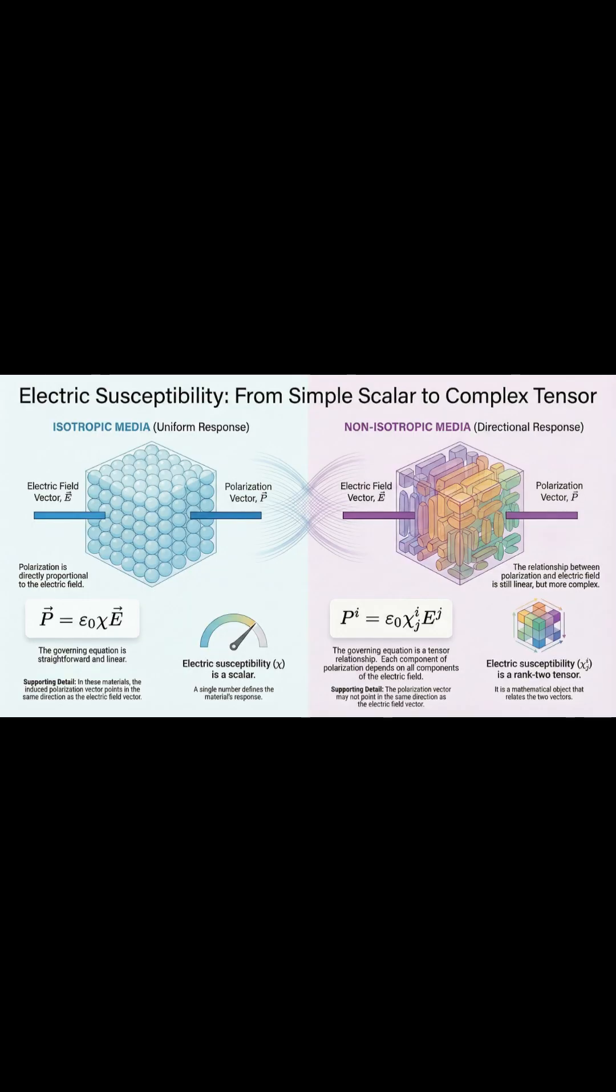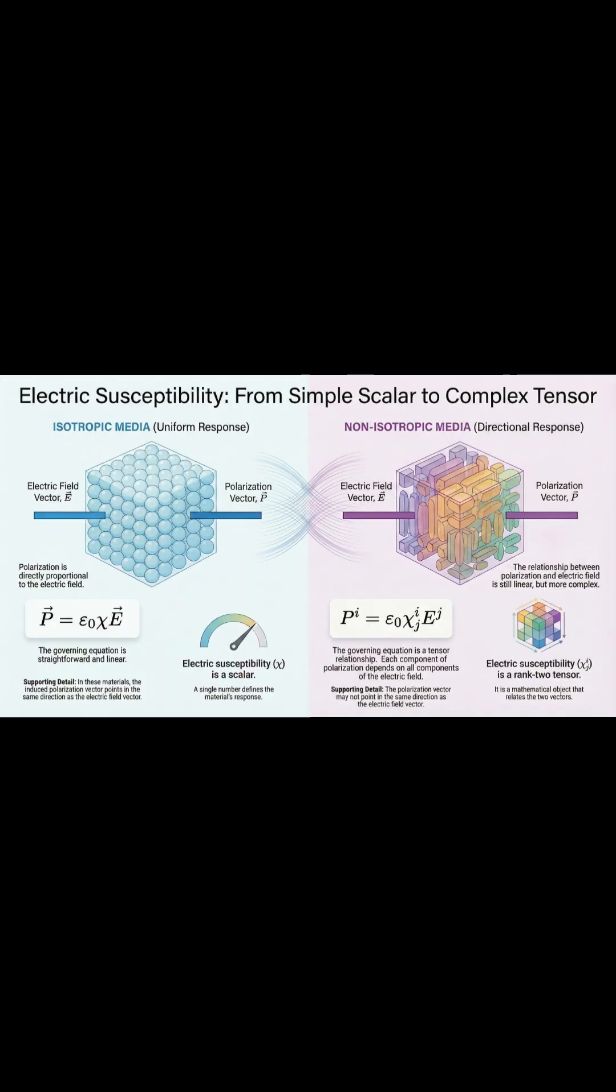And this distinction is absolutely key for designing everything from advanced optical lenses to electronic components. First, the big physical difference here is all about directional response. Think of an isotropic material kind of like a smooth bowling ball. It looks the same from every direction, right?